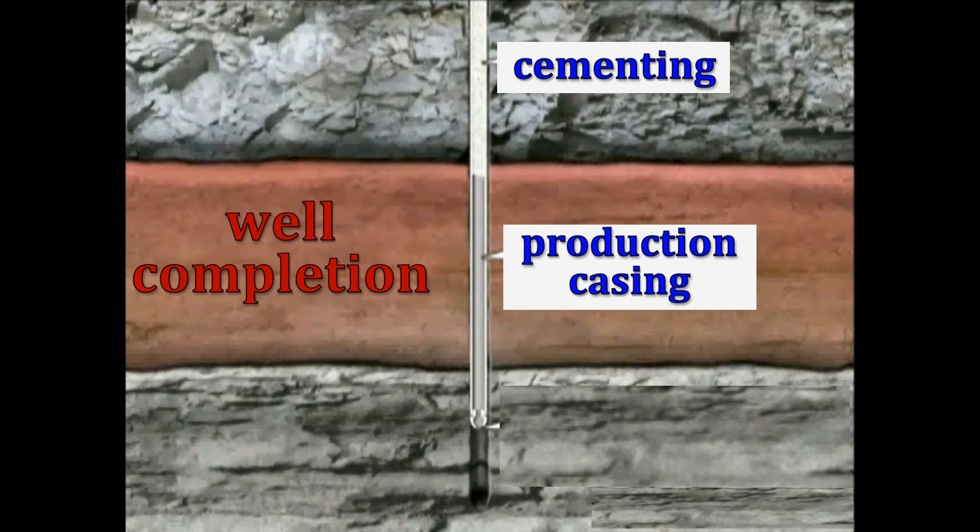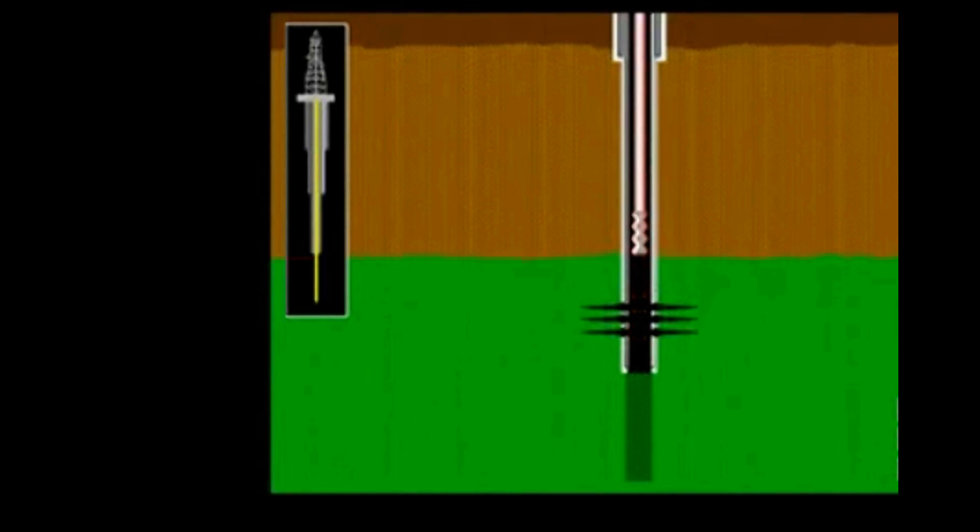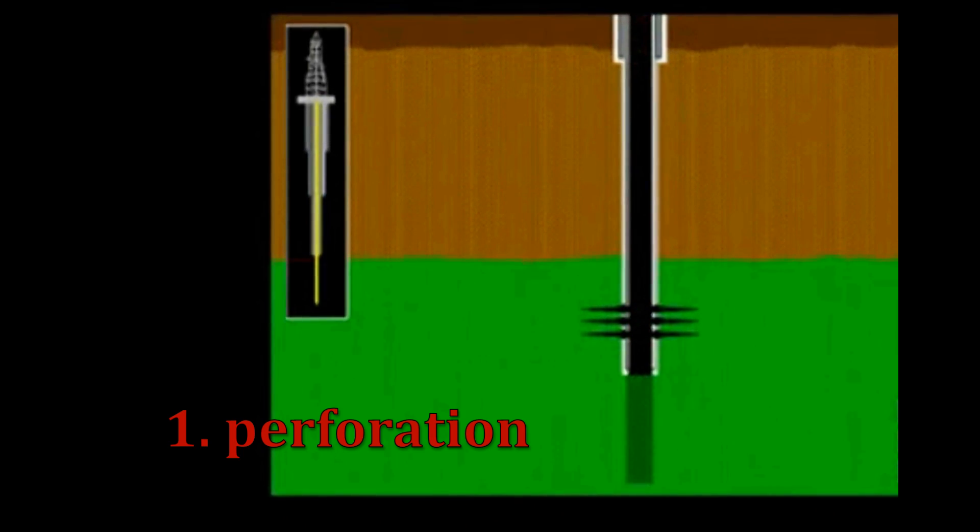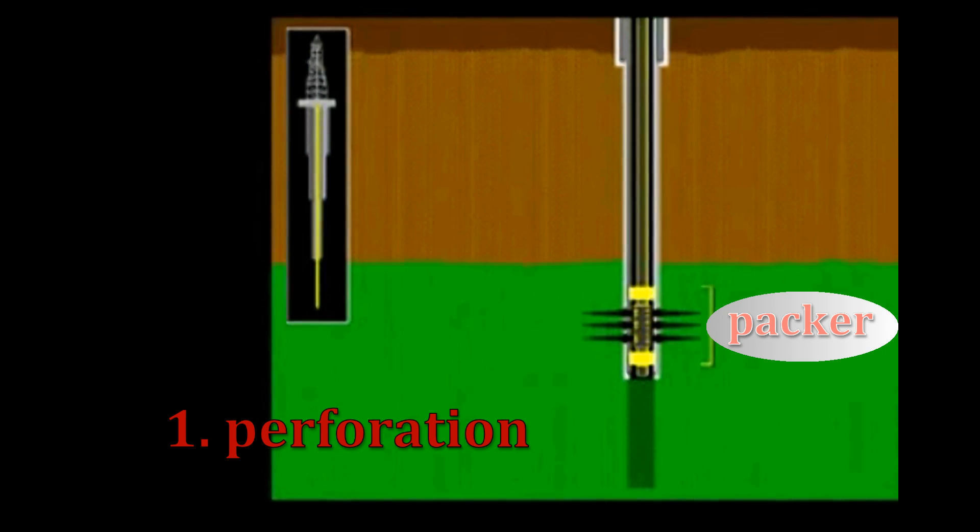Well completion, however, involves more than running casing and sealing the hole. To complete a well, after the casing is run and cemented, the following procedures can be performed. First, perforation. Once the production casing is in place in the zones of interest, the casing is then perforated,